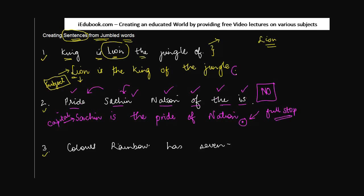This is what I did here also - after jungle, I had put in a full stop. The third one, again the most simplest of all: colors rainbow has seven. This is again making any sense? The answer is no. So how do we make sense out of it? We apply our common sense. We are talking about what? A rainbow. We are talking about seven, we are talking about colors. And we know very well that rainbow has seven colors.